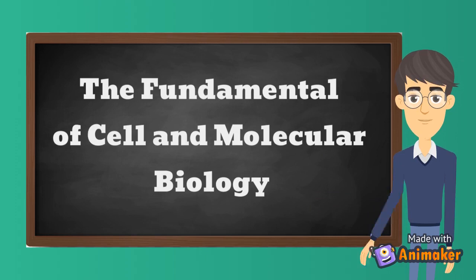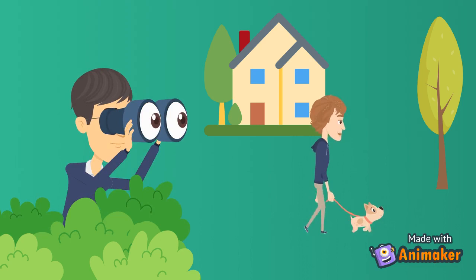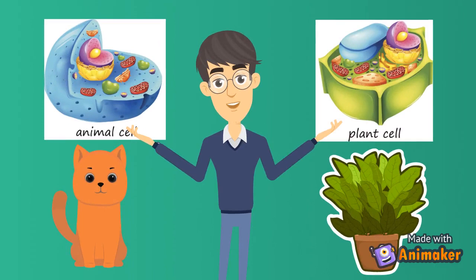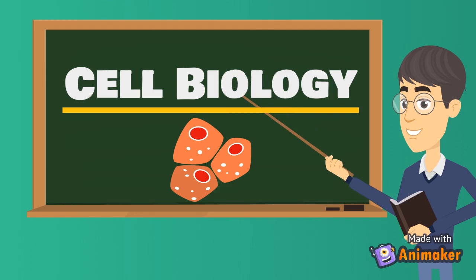Hello, awesome learners! Join me as we explore the fundamentals of cell and molecular biology. Can you help me figure out what living things are present nearby? Yes, you're right — there are plants, animals, and humans. Cells come in a tremendous variety of shapes and sizes, and every living thing has thousands, millions, and even trillions of them, containing the fundamental molecules of life.